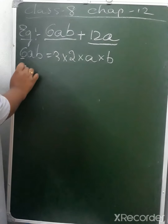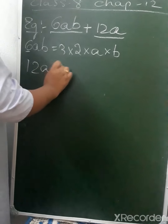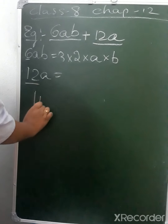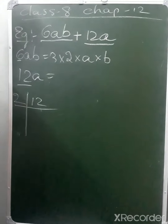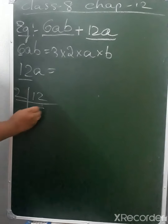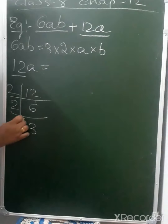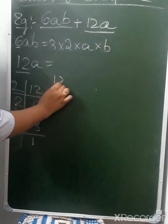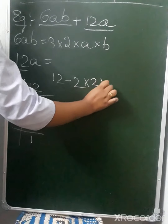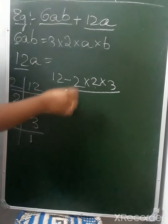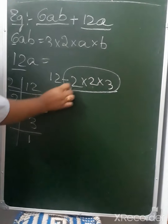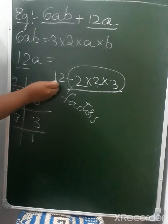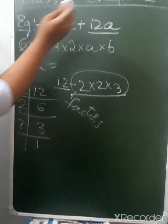Now let's see 12a. How can we write 12a? First, we find the factors of 12. Using the 2 times table: 2 table 6 times, again 2 table 3 times, and finally 3 table 1 time. So 12 can be written as 2 into 2 into 3. These are the factors of 12. Let's substitute these factors.